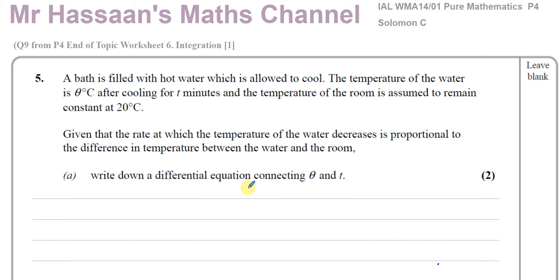This question is about differential equations and integration. A bath is filled with hot water which is allowed to cool. The temperature of the water is θ degrees Celsius after cooling for T minutes, and the temperature of the room is assumed to remain constant at 20 degrees Celsius. Given that the rate at which the temperature decreases is proportional to the difference in temperature between the water and the room, write down a differential equation connecting θ and T.